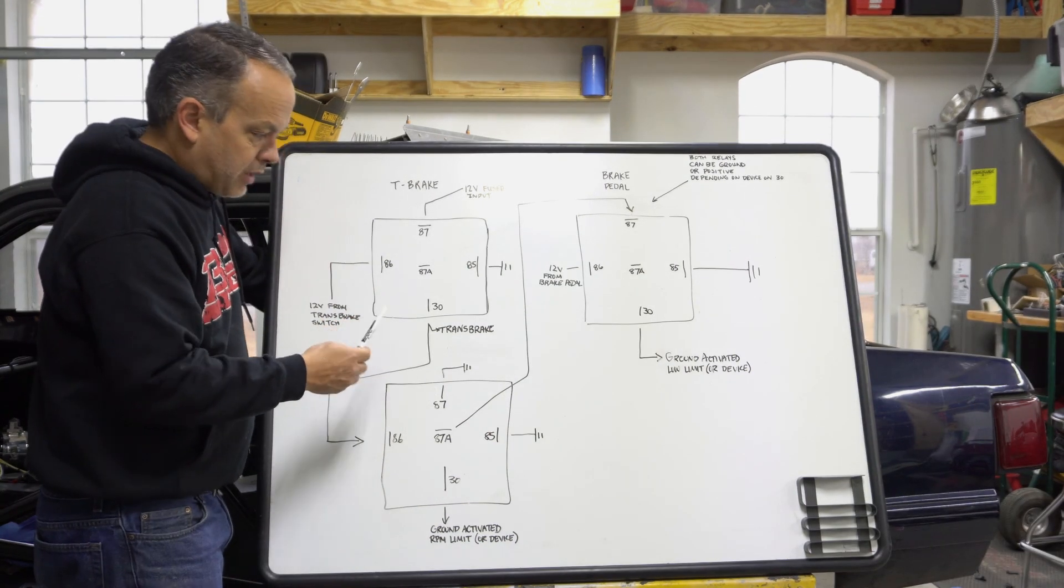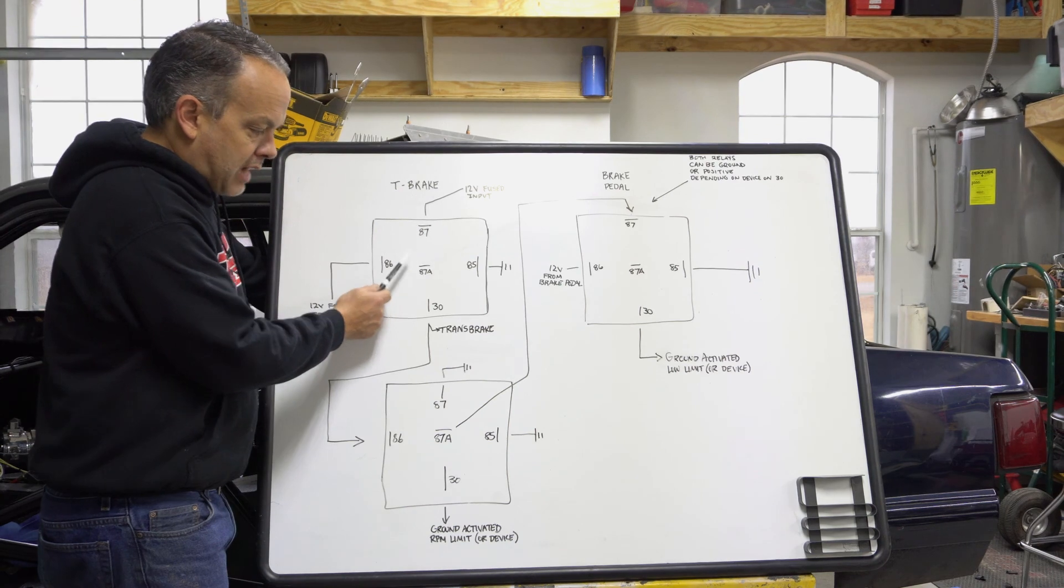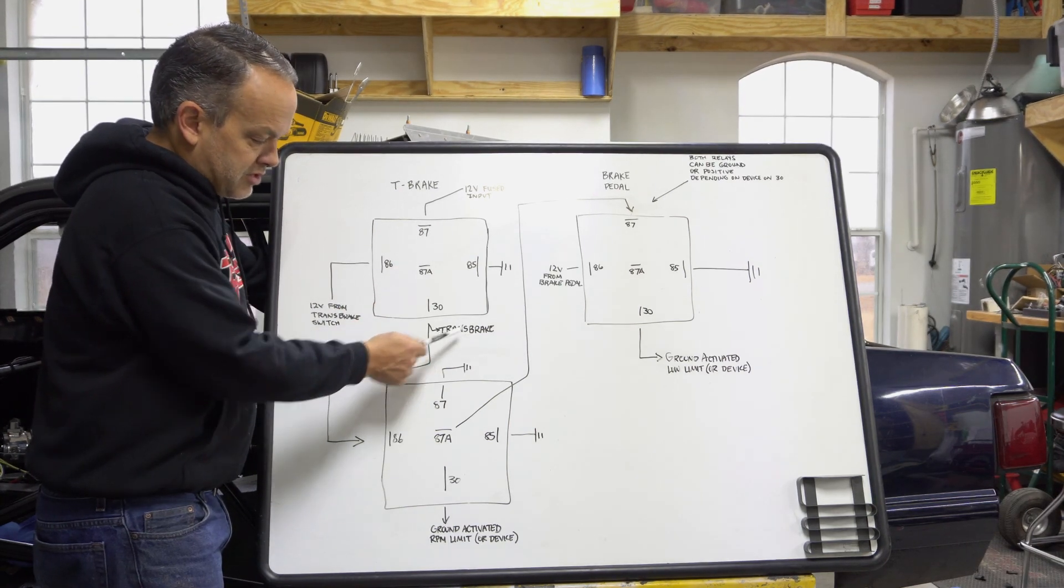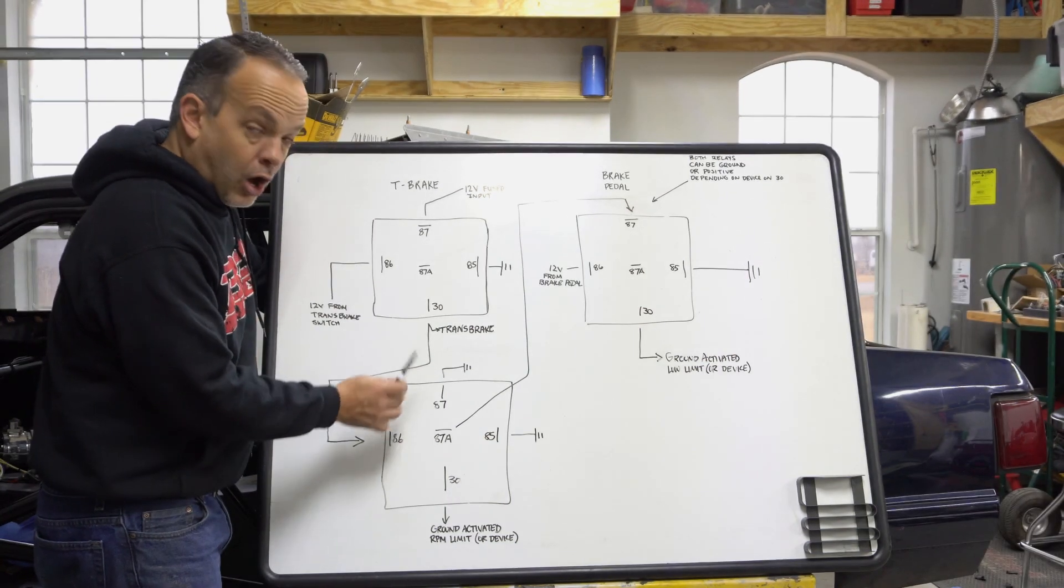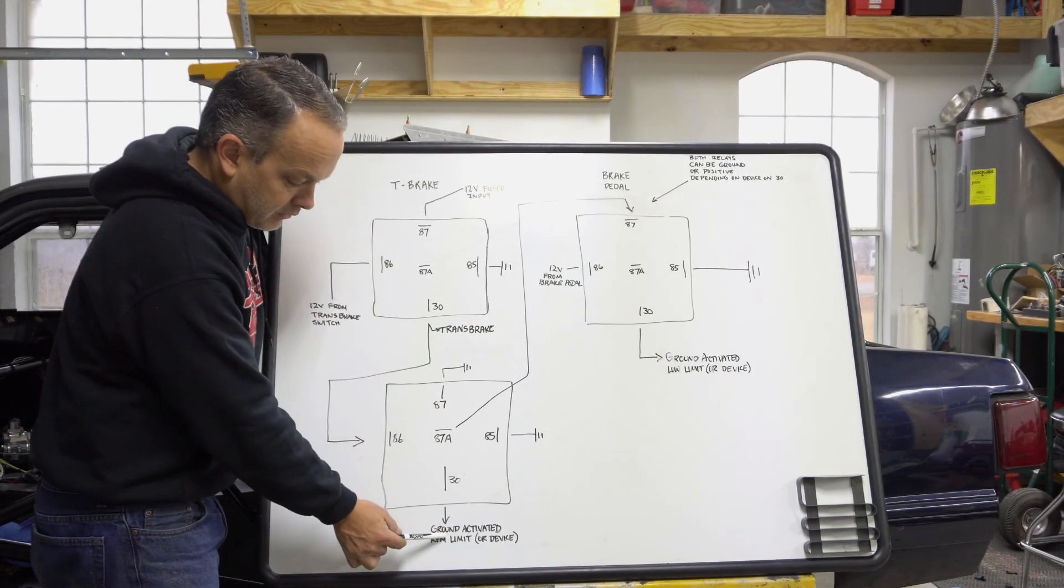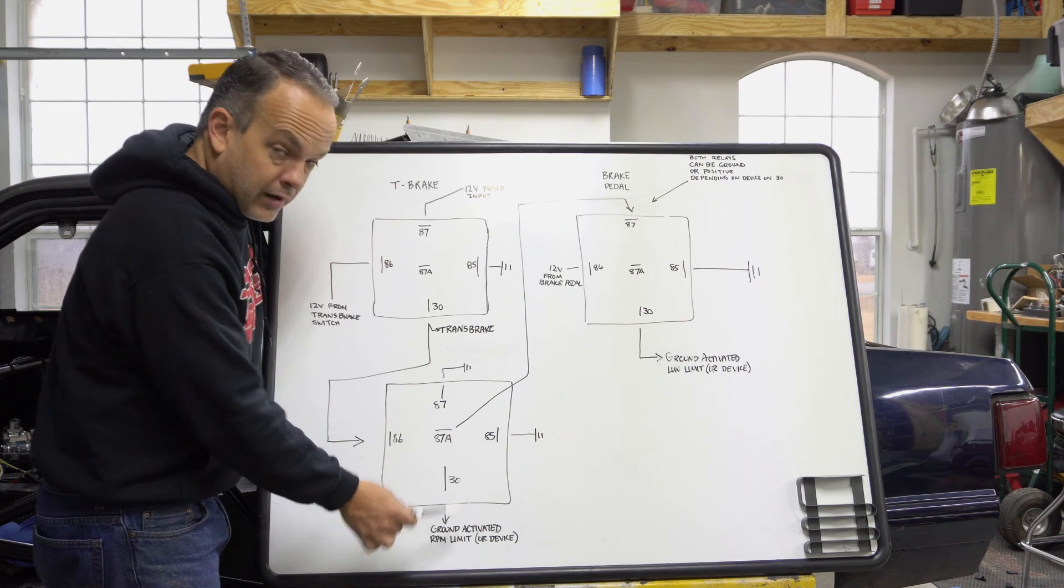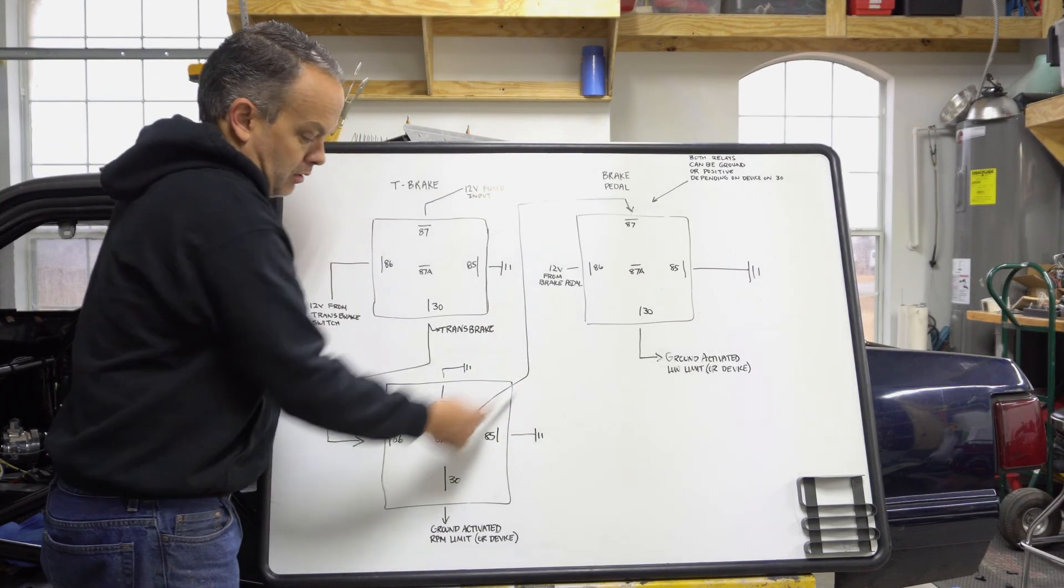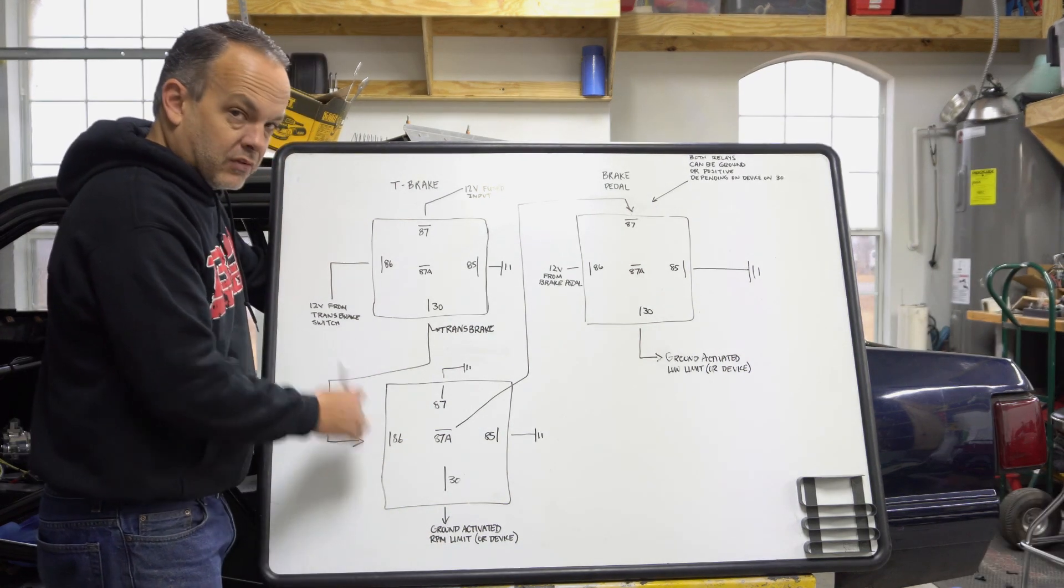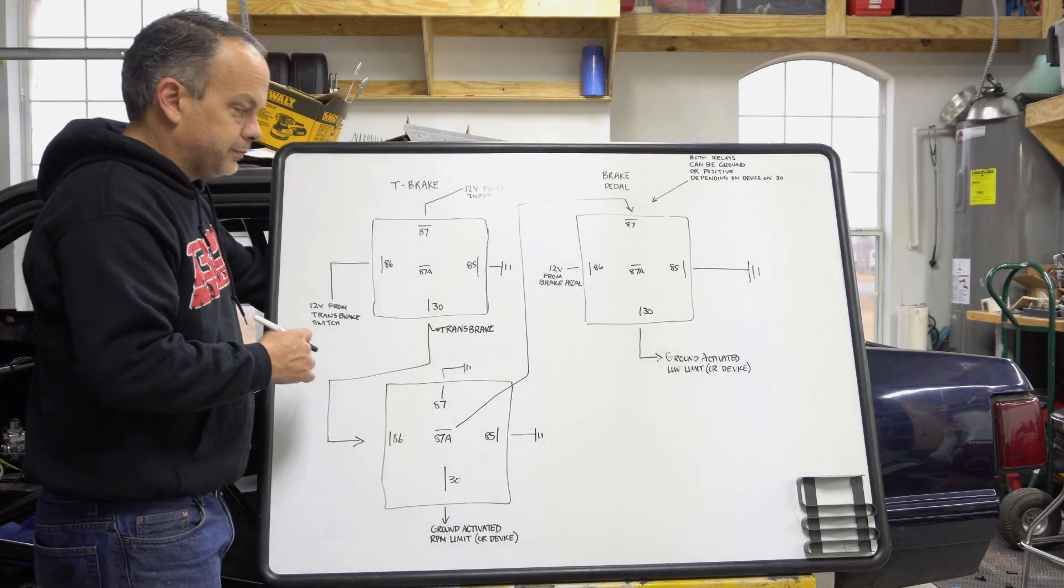When you hit the transbrake, this relay becomes active, turning the transbrake on, turning this relay on, turning 87A off, and grounding this wire. This wire is the high side limiter, so it's going to go from 4,500 over here to 5,000 RPM so the car can leave the line.